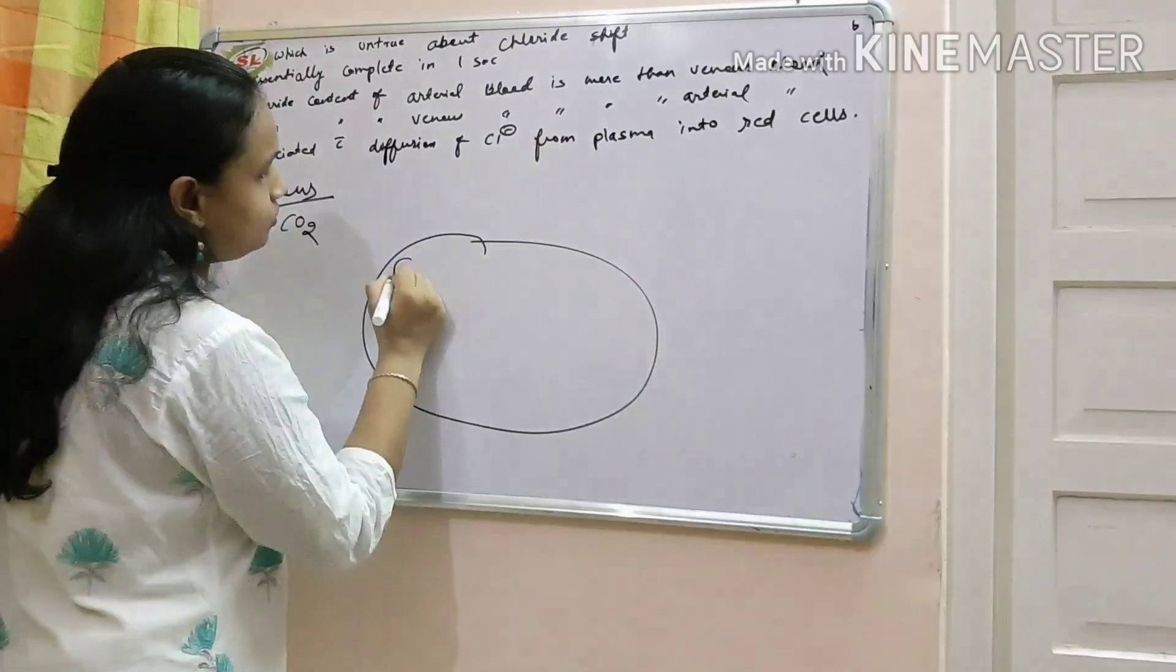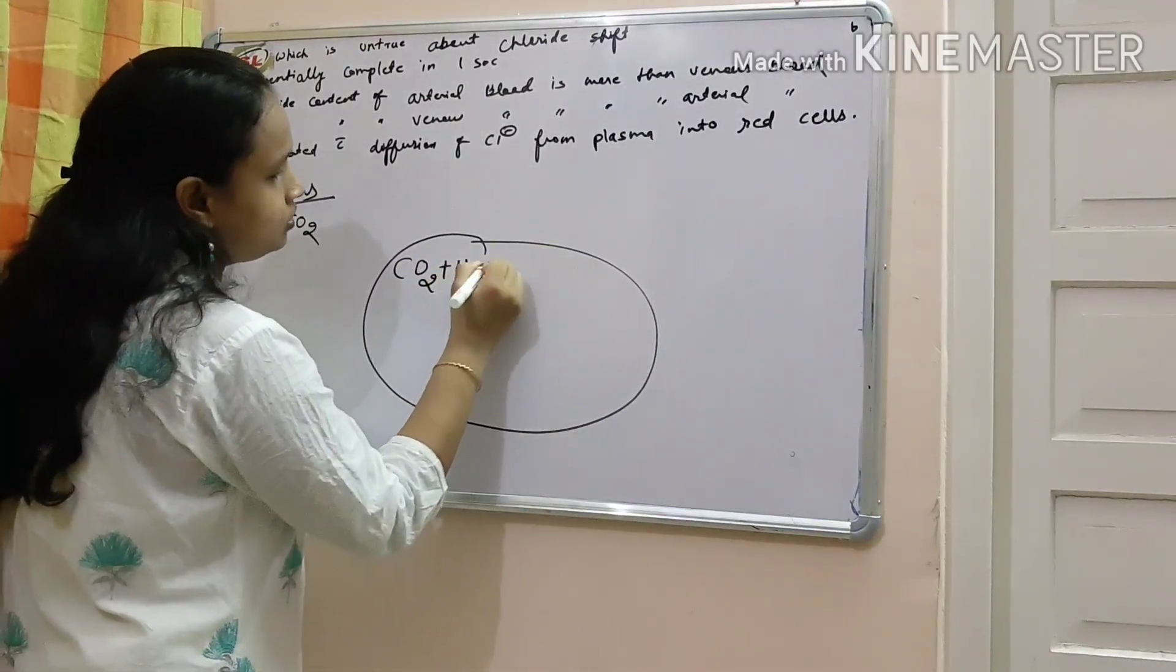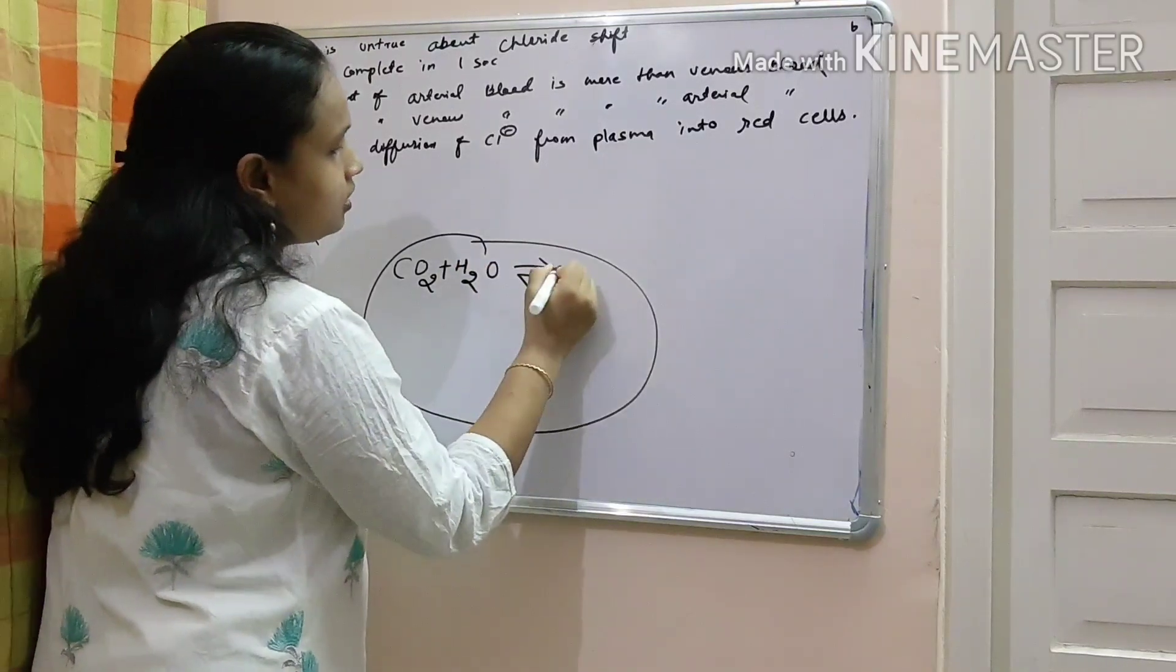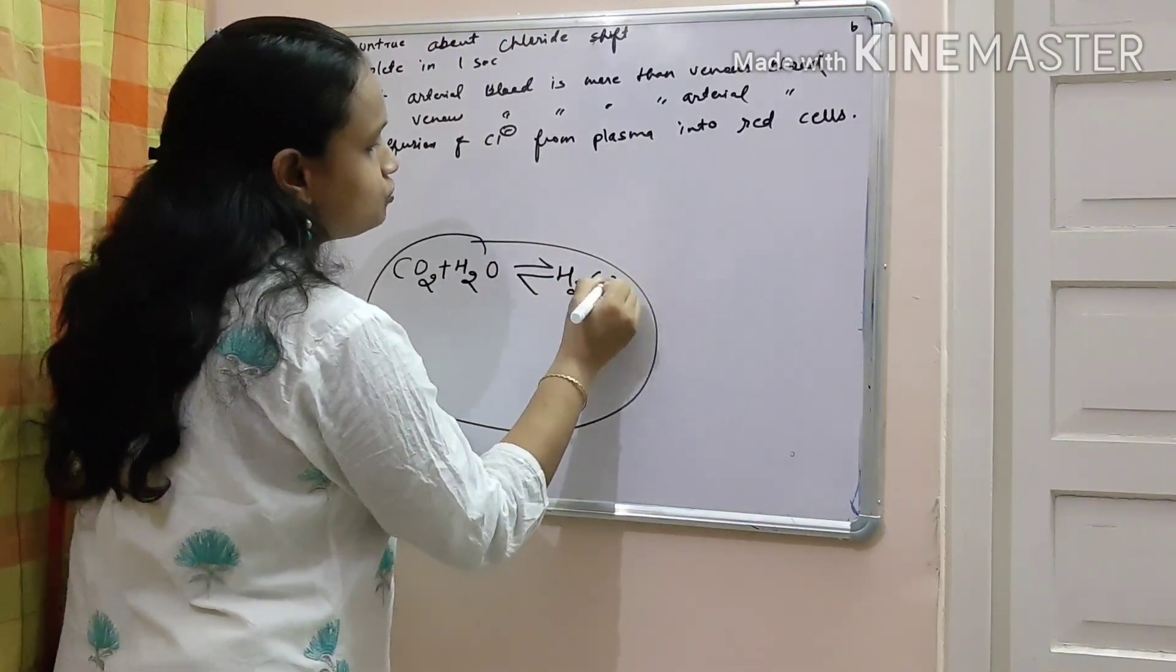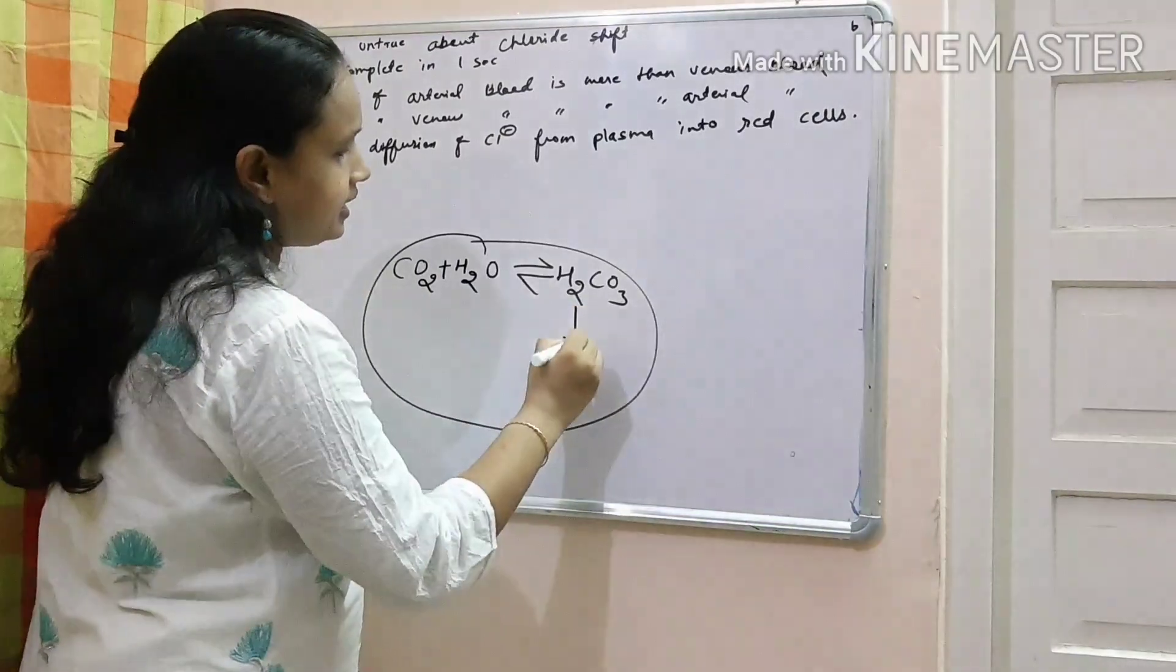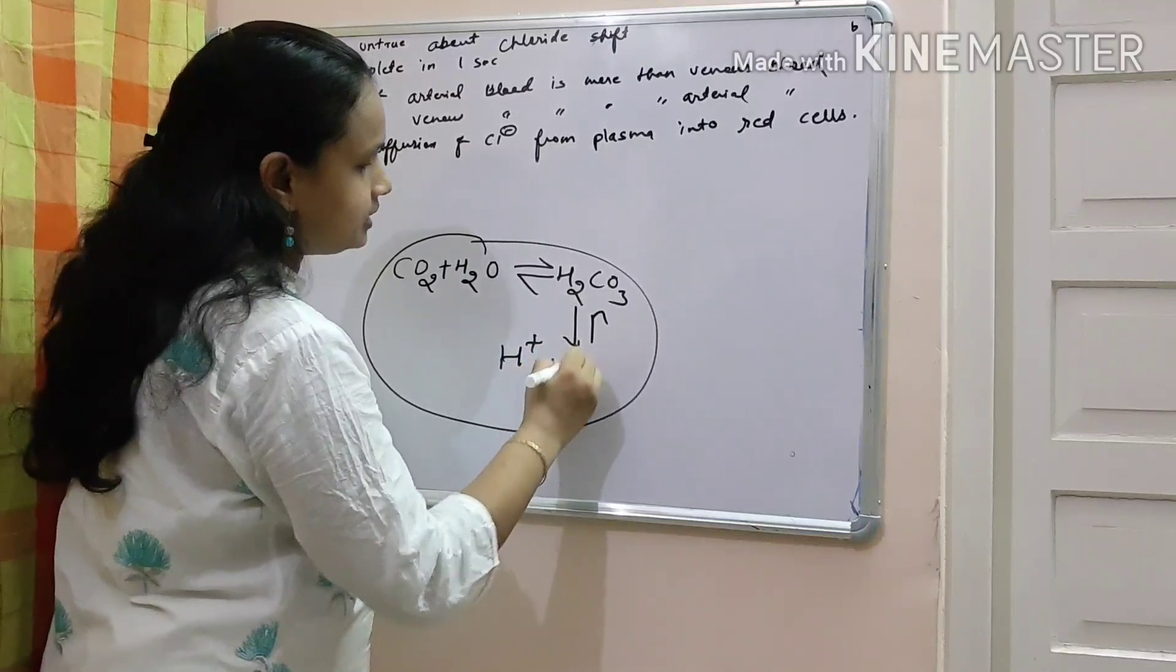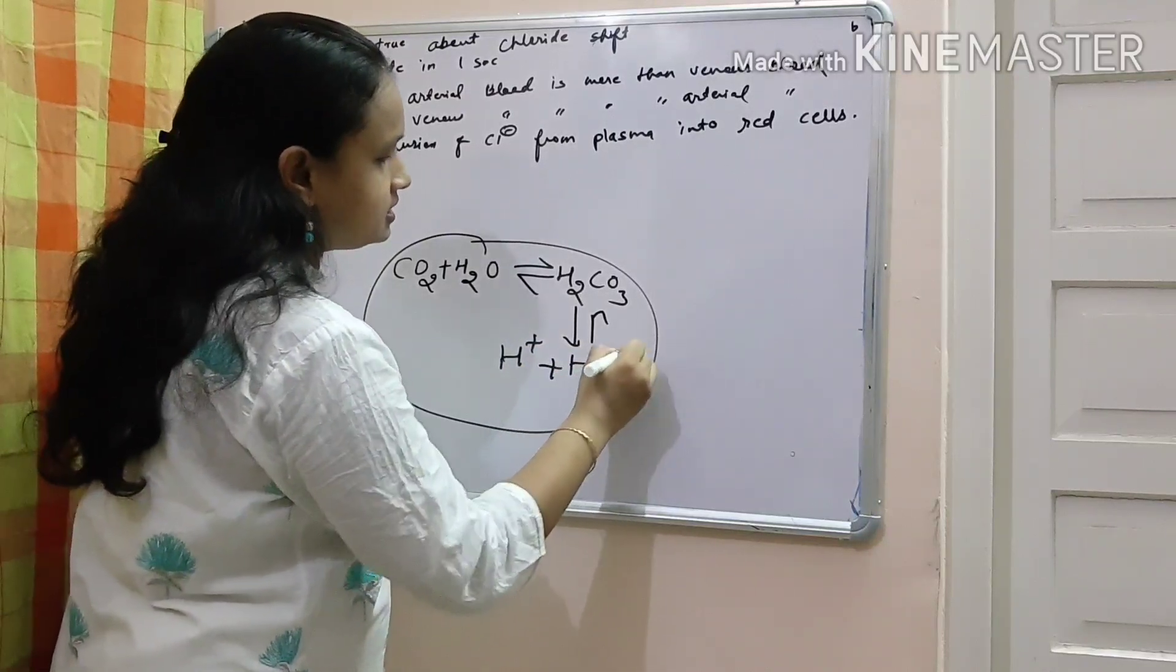In RBC, this CO2 combines with H2O to form carbonic acid, H2CO3. And this carbonic acid is again dissociated into H plus and HCO3 minus ion.